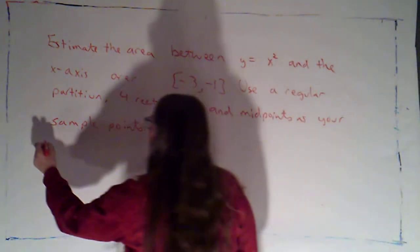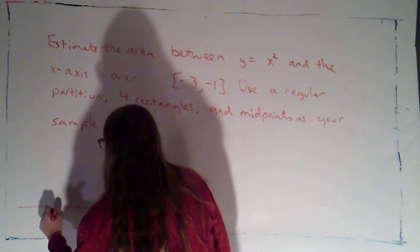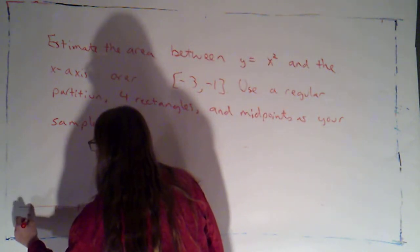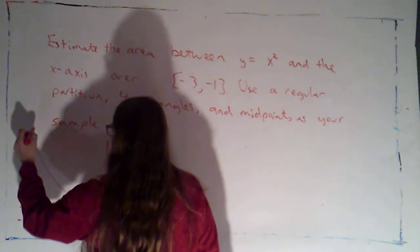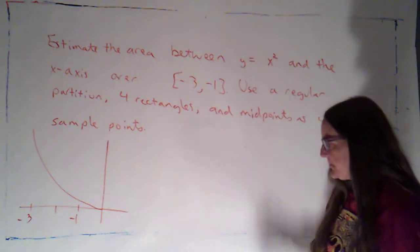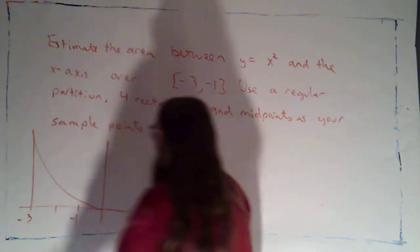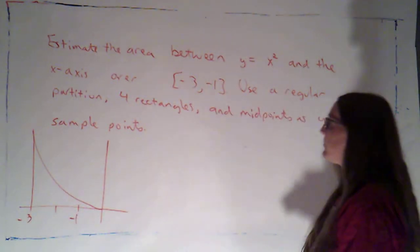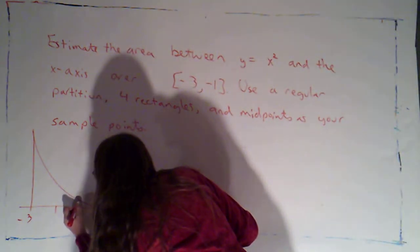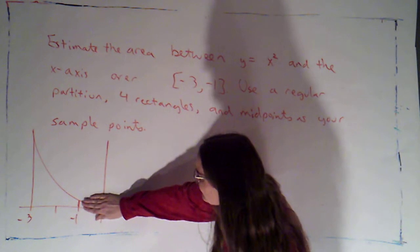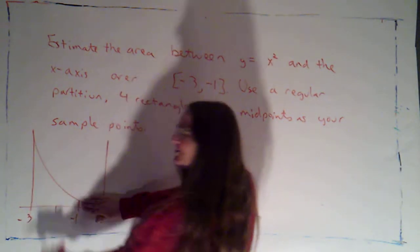So we're looking at x squared. Now we're looking over the x interval from negative 3 to negative 1. So it happens to be over there. I'm not going to draw this perfectly to scale, but there's my x squared. And I want the area between that curve and the x-axis. So we're looking for this area right here. I should draw in a wall here as well. We're not concerned with that piece of area. We're just looking for the area between negative 3 and negative 1 between the curve and the x-axis.